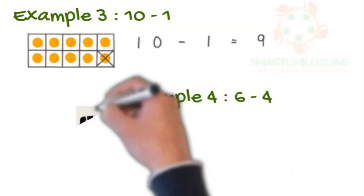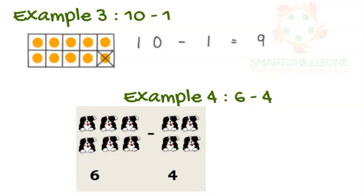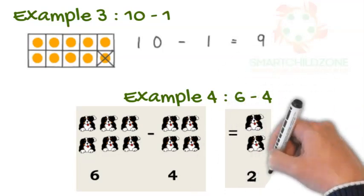Example 4: 6 minus 4. Take away 4 from 6 and we will get 2.